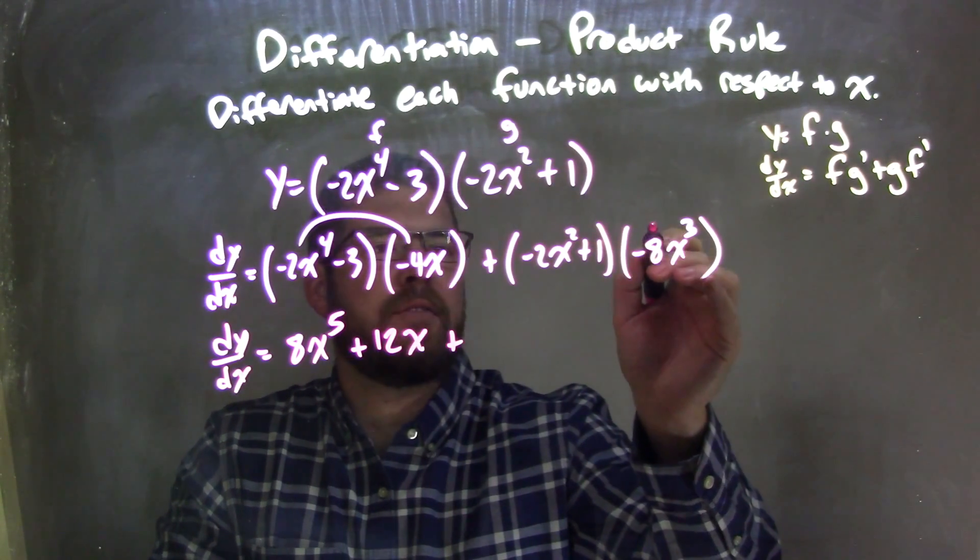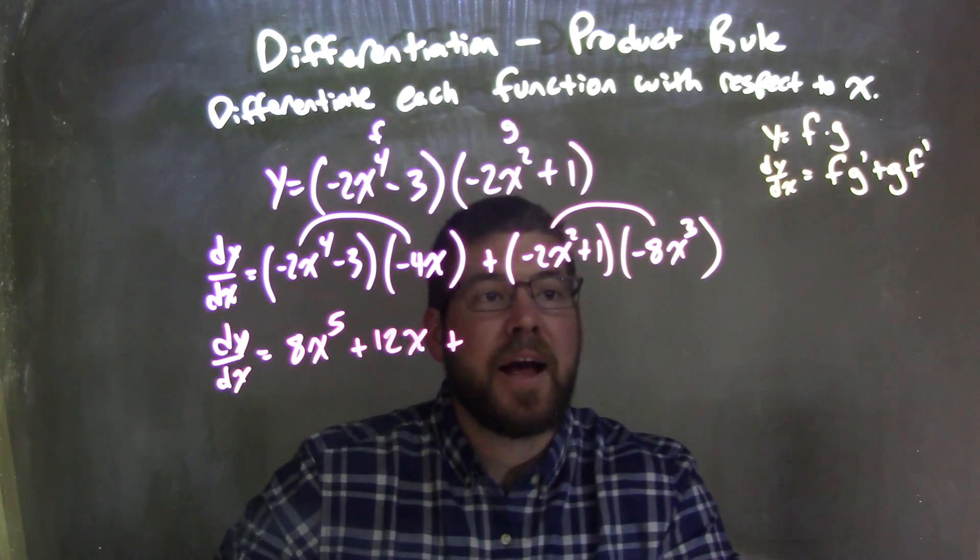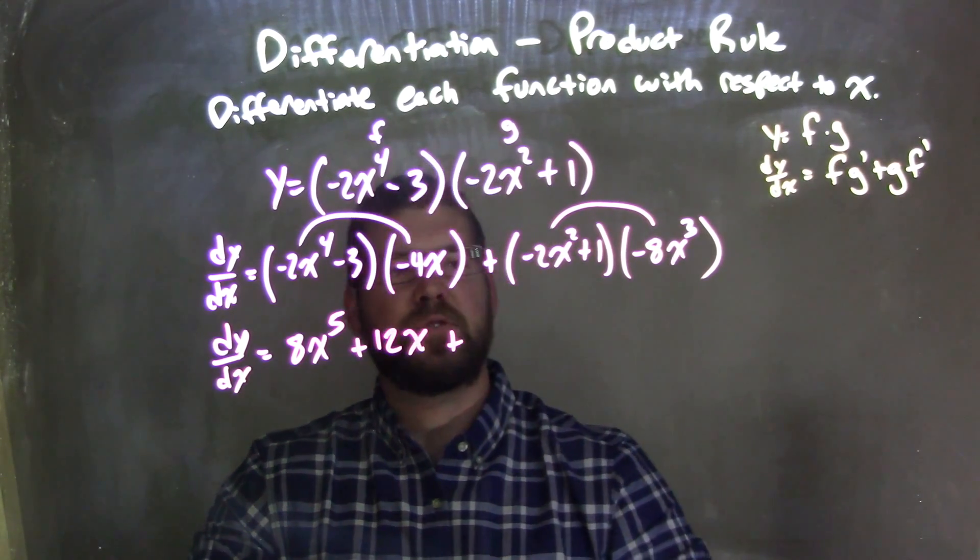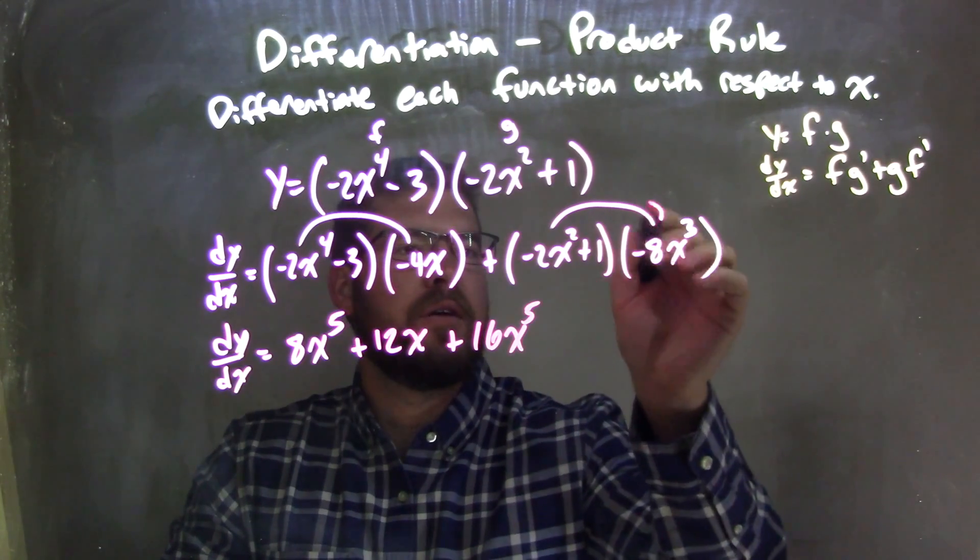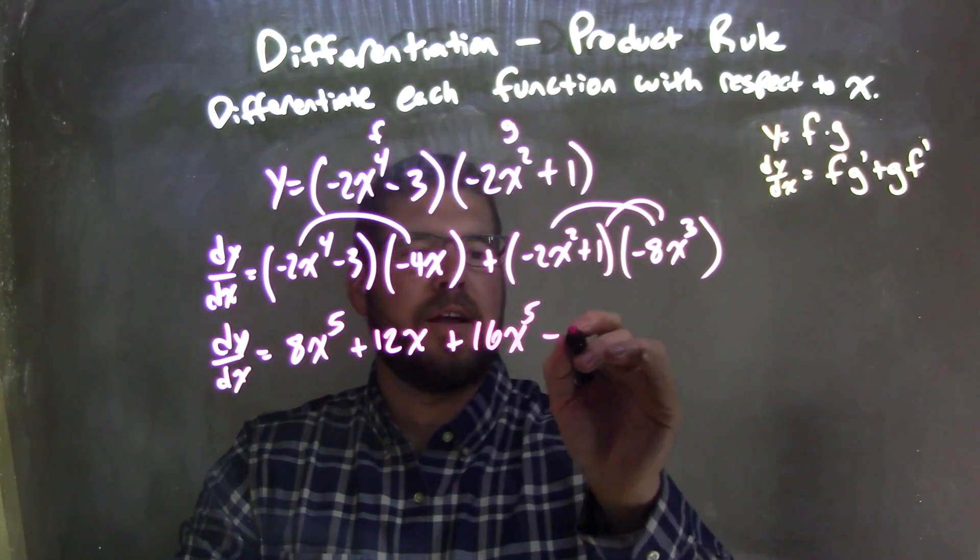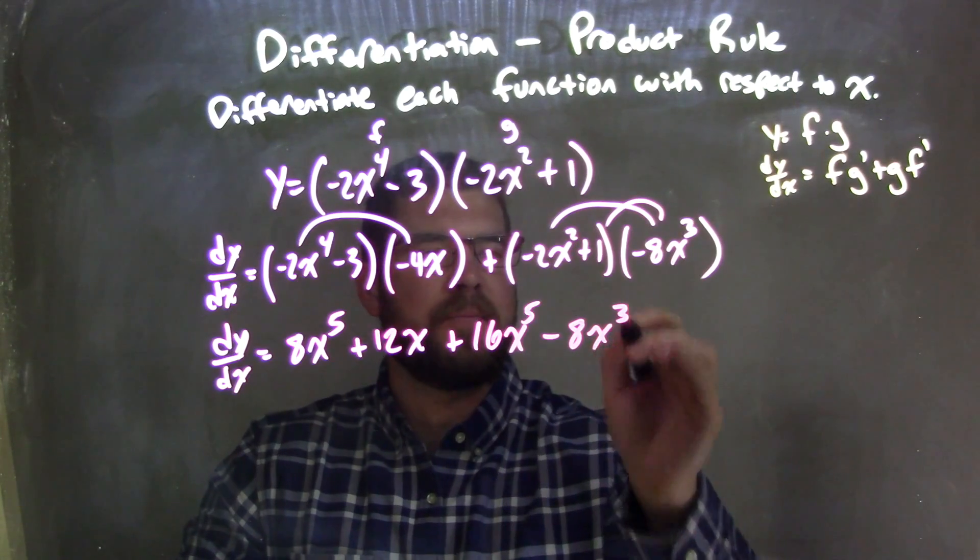Plus, distribute the negative 8x to the 3rd around, so negative 8x to the 3rd times negative 2x squared is positive 16x to the 5th, and multiply again, negative 8x to the 3rd by 1, and we have a negative 8x to the 3rd.